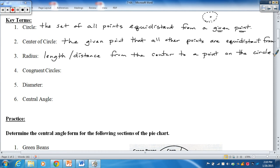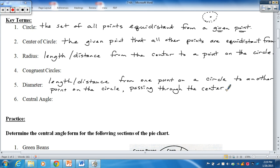Skipping down to the diameter is the length or distance from one point on a circle to another point on the circle passing through the center. All these terms should be fairly familiar. The next two actually are probably newer terms or newer concepts.